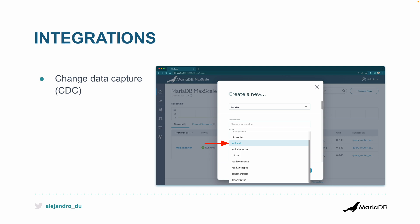On the integrations front, there's change data capture, which is about sending database data and schema changes somewhere else. The industry standard is Kafka — you send it to a queue. So this means exporting database events to Kafka, and from there you can do whatever you want. It's a really powerful feature.